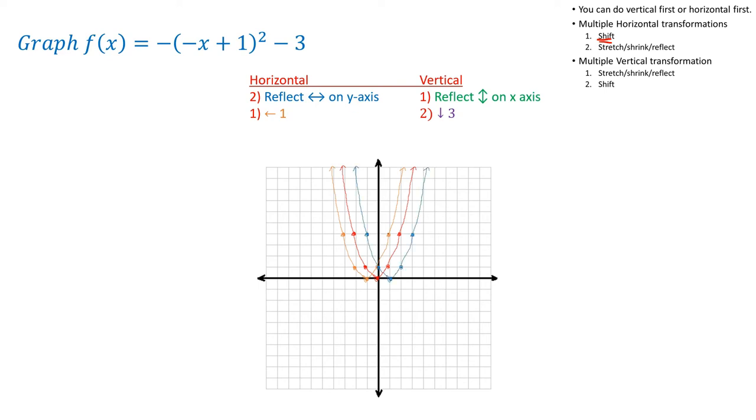So it used to be positive 1. Now reflect. It used to be negative 3. Now positive 3. Now move it vertical direction on the x-axis, up and down. Get that green one. Now move it down 3. There you go. That is the final action.